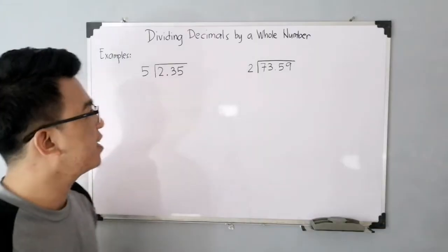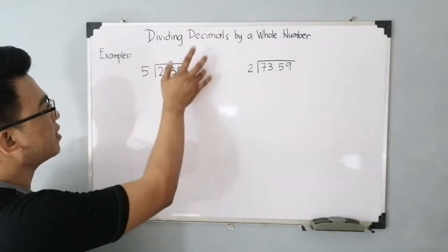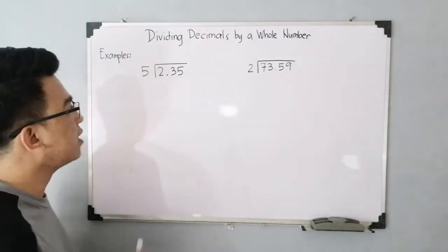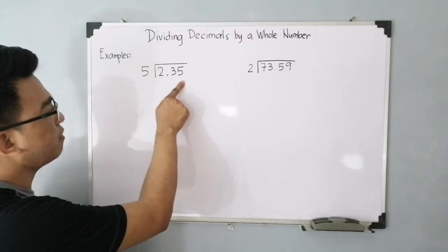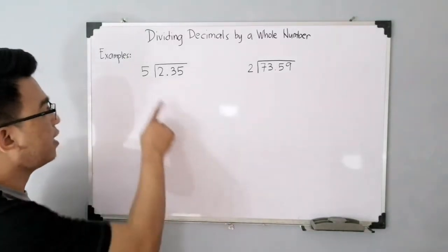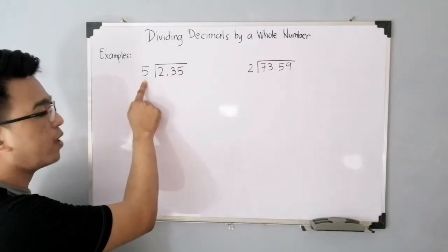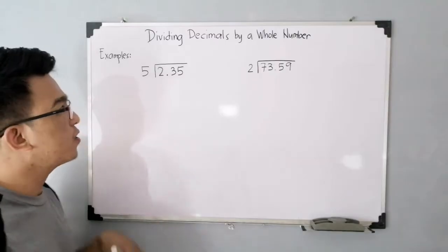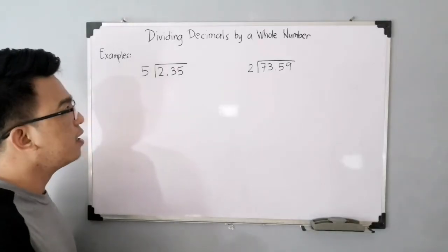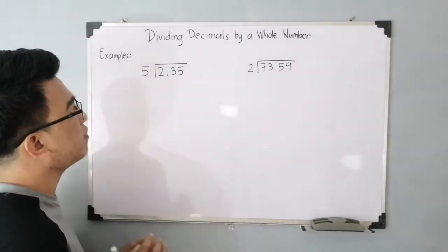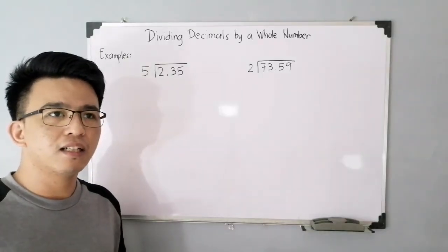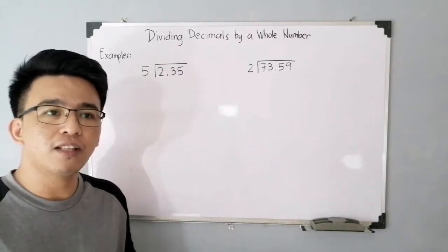We have here this given decimal and a whole number. I'll reveal first number 1: 2.35 is your dividend and this whole number 5 will serve as your divisor. So how do you divide it? What is the step-by-step process? Actually, when it comes to dividing decimals by a whole number, it's like dividing normal division of whole number by whole number.